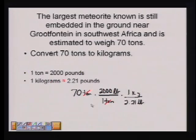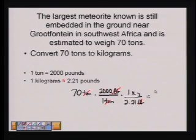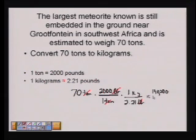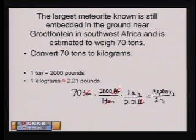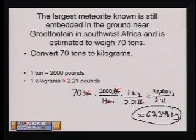Multiplying by 1 kilogram over 2.21 pounds allows the pounds to cancel — one in the numerator and one in the denominator. Now I multiply straight across: 70 times 2,000 gives 140,000, divided by 2.21. When I do the division, I get approximately 63,348 kilograms. I have to use the approximately equal sign because I used an approximation in my calculation.